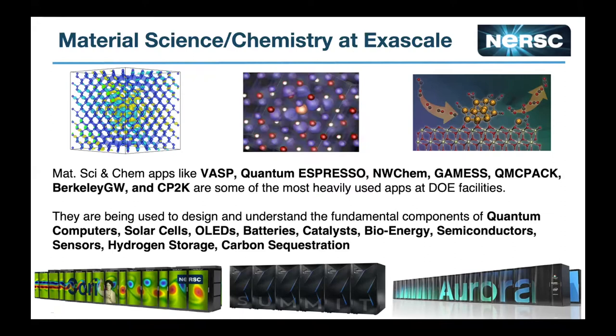We know that material science codes and chemistry codes are some of the top consumers of computing time at various HPC centers, and it's true for NERSC as well. Some of these applications include VASP, Quantum ESPRESSO, NWChem, CP2K, and Berkeley GW.